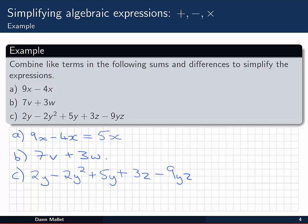In c we have a bit more to work with. Again it's still a sum or a difference, but this time we've got 2y, 2y squared, 5y, 3z and minus 9yz. It's not as obvious what's like and what's not like in this particular expression. But if we look closely we can again identify the like and non-like terms.